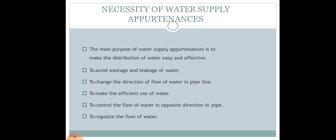Sometimes we might need to change the direction of flow in a water supply pipeline. At those locations where the direction of flow is to be changed, we need something to control the flow direction, and that is where we need appurtenances. Appurtenances also enable efficient use of water and control the flow of water in the opposite direction in a pipeline, since water has to flow in one direction only. Using proper appurtenances controls flow in the opposite direction and regulates the flow of water.